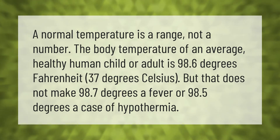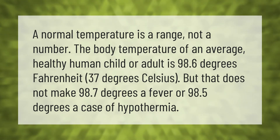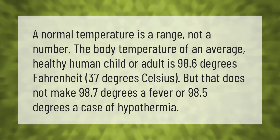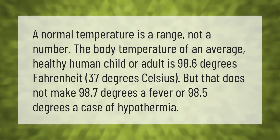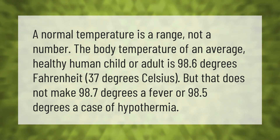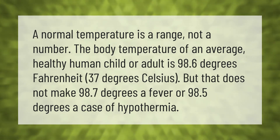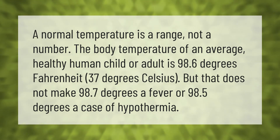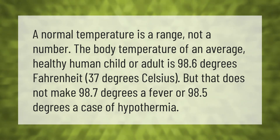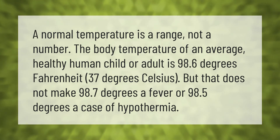A normal temperature is a range, not a number. The body temperature of an average healthy human child or adult is 98.6 degrees Fahrenheit, 37 degrees Celsius. But that does not make 98.7 degrees a fever, or 98.5 degrees a case of hypothermia.